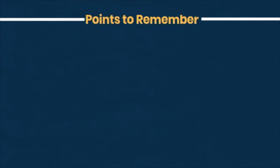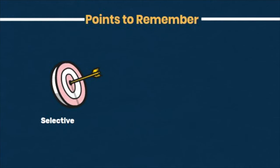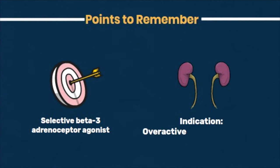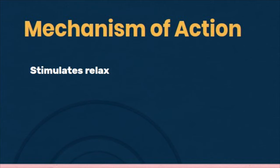Points to remember about Mirabegron: Mirabegron is a selective beta-3 adrenoceptor agonist and is indicated for urgency, frequency, or incontinence in overactive bladder syndrome. So what is the mechanism of action of Mirabegron?